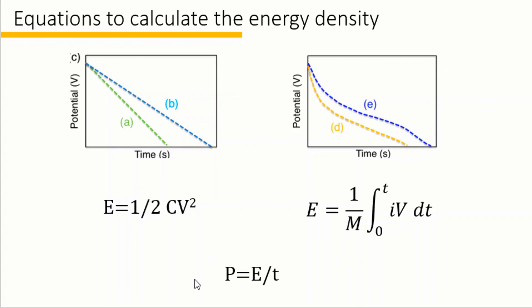To calculate the average power density, we divide E by t. To further obtain the Ragone plot, we should plot E as a function of P at different operating rate.